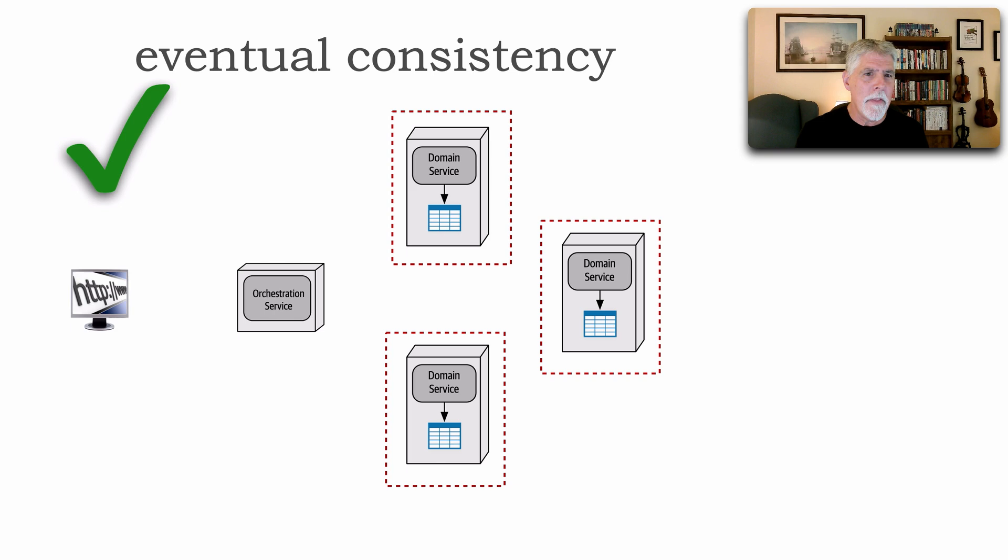Now the difference between that and eventual consistency is as follows. Notice that the transaction boundary here is at the service level, not at the request level. That's the big difference. And let me illustrate what happens on both a happy path as well as when errors occur.